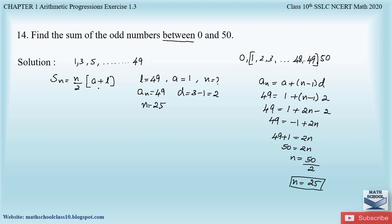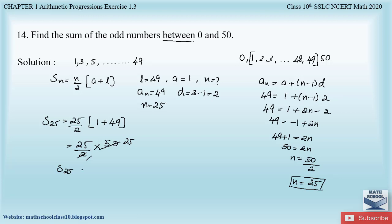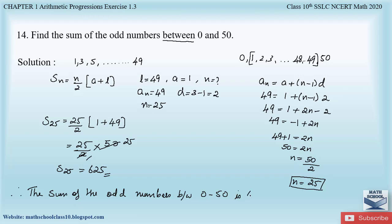Now substituting into the sum formula: S25 = 25/2 × (1 + 49) = 25/2 × 50 = 25 × 25 = 625. Therefore, the sum of the odd numbers between 0 and 50 is 625.